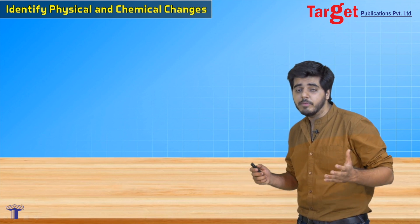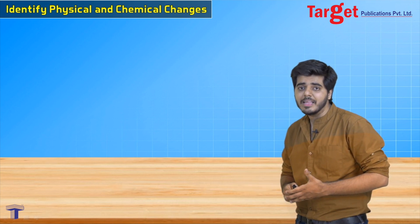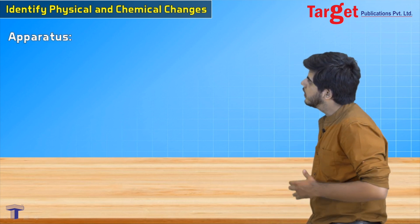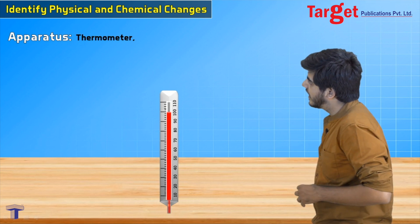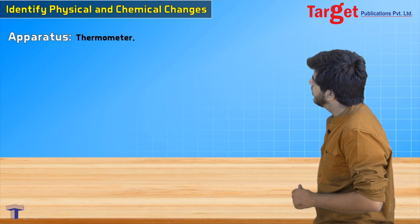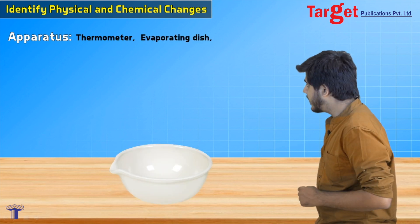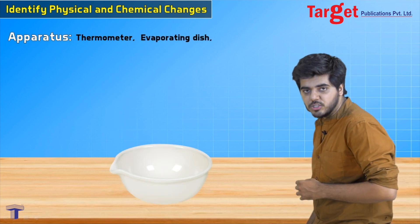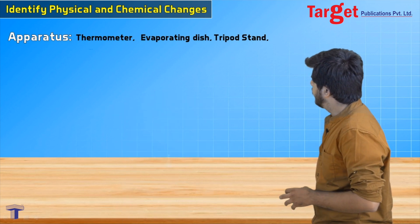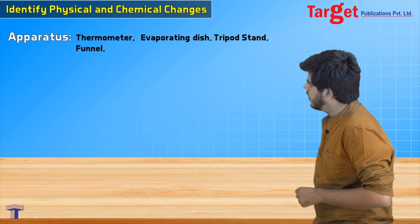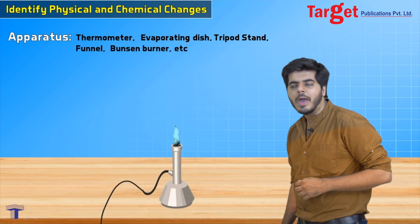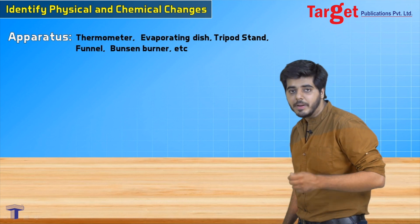Before starting, we are going to jot down the materials and apparatus required for the experiment. The apparatus we require are: first, a thermometer; second, an evaporating dish; third, a tripod stand; fourth, a funnel; and fifth, a Bunsen burner.